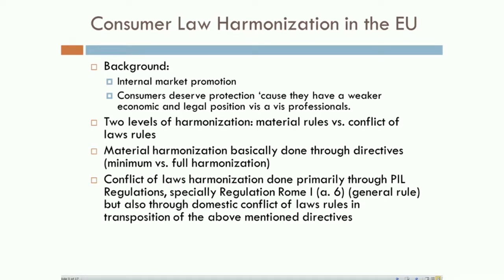The first level — which I won't focus on — is harmonization through material rules. Then we have harmonization measures that affect only conflict of law rules, which are the ones I'm going to touch upon. Material harmonization is done through directives — either minimum harmonization directives or the more recent full harmonization directives. We implement or transpose directives into our national domestic legal systems.